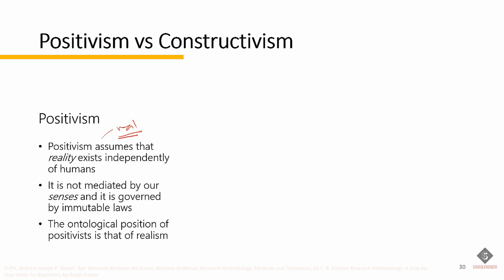Positivists strive to understand the social world like the natural world. In nature, there is a cause and effect relationship between phenomena and, once established, they can be predicted with certainty in the future. For positivists, the same applies to the social world because reality is context-free. Different researchers working in different times and places will converge to the same conclusions about a given phenomenon.